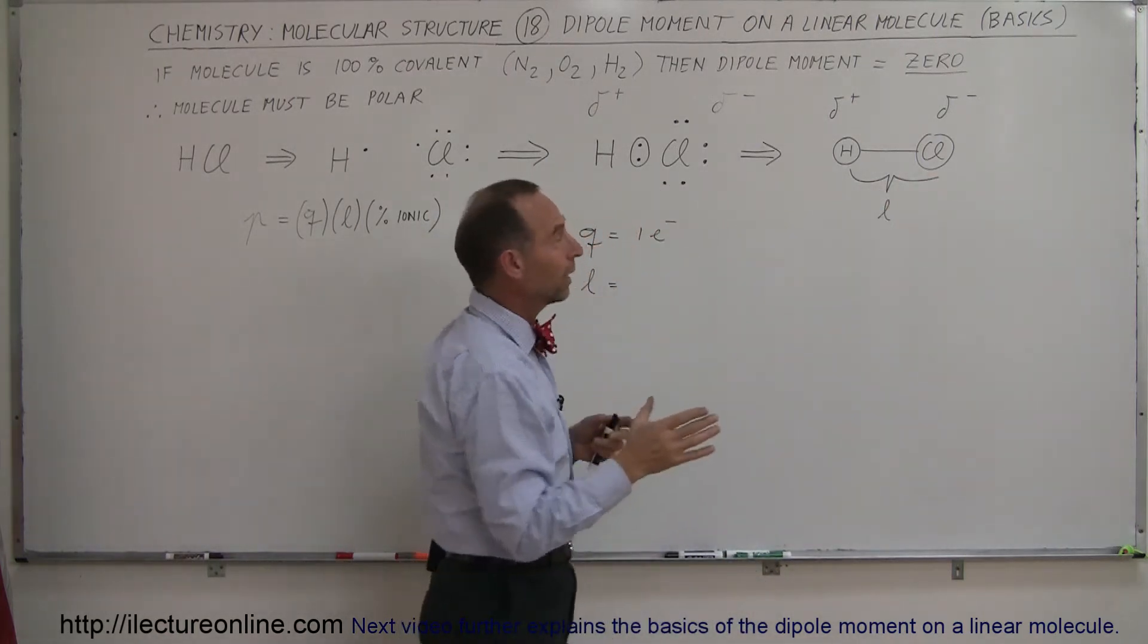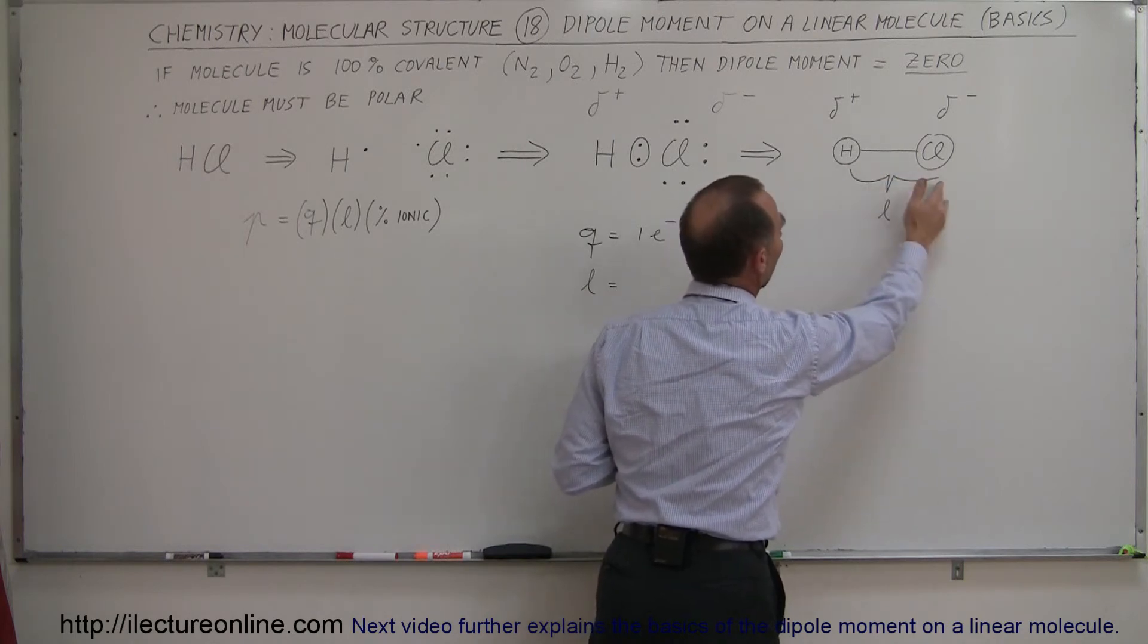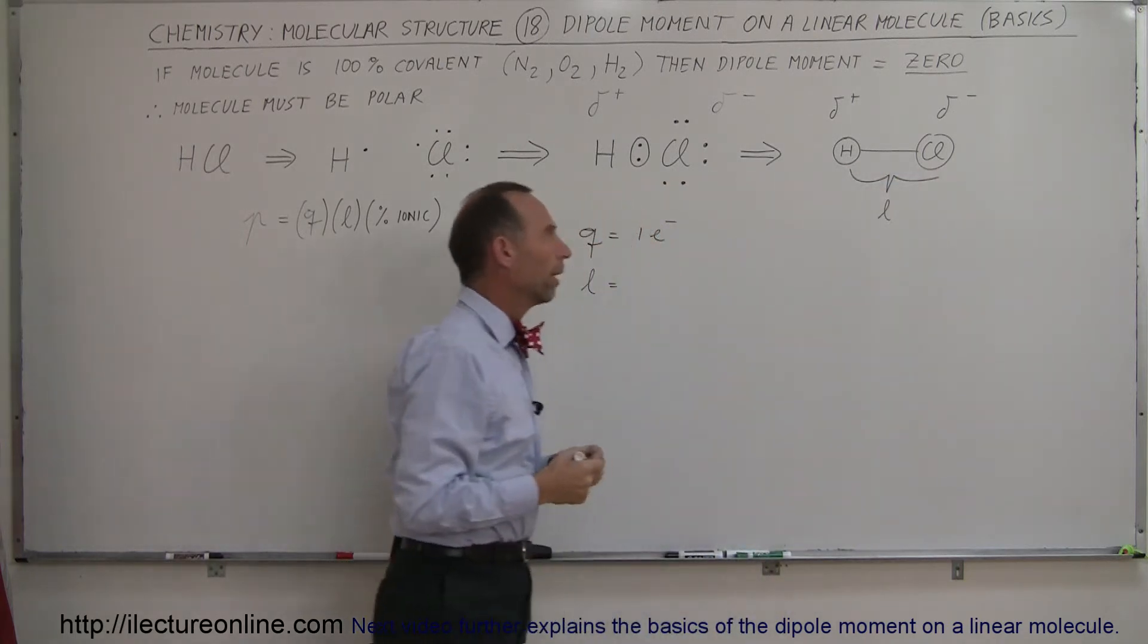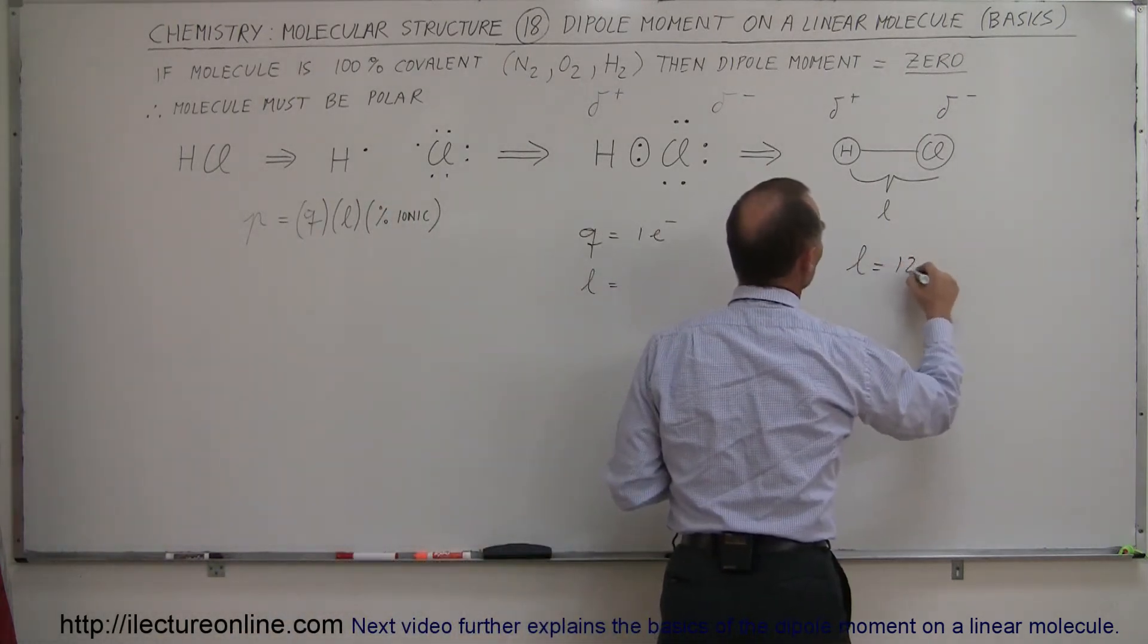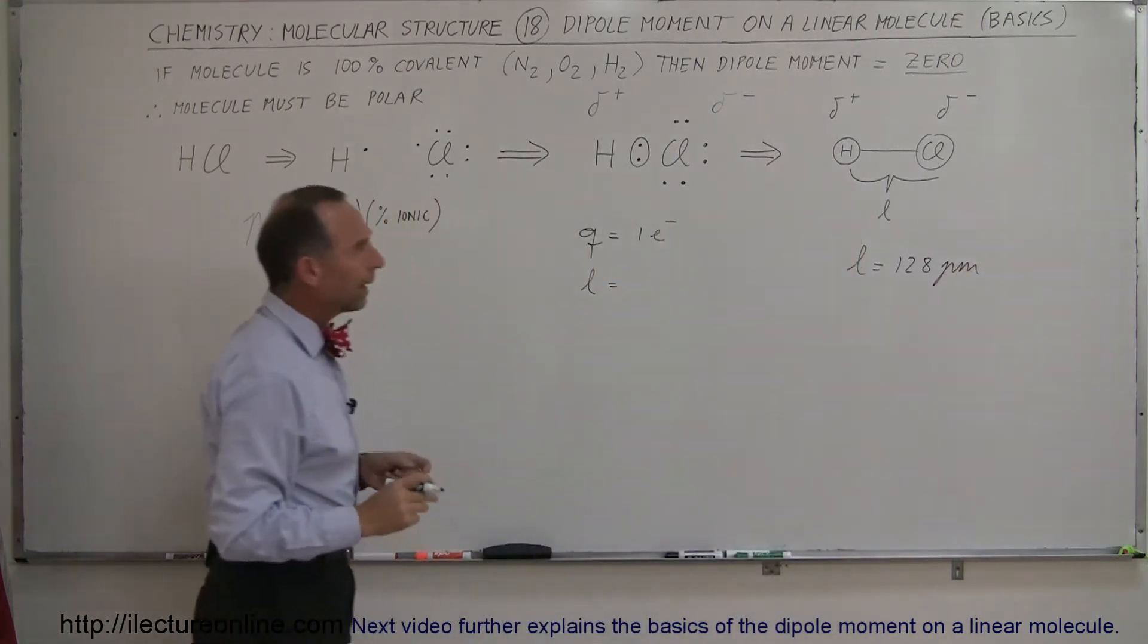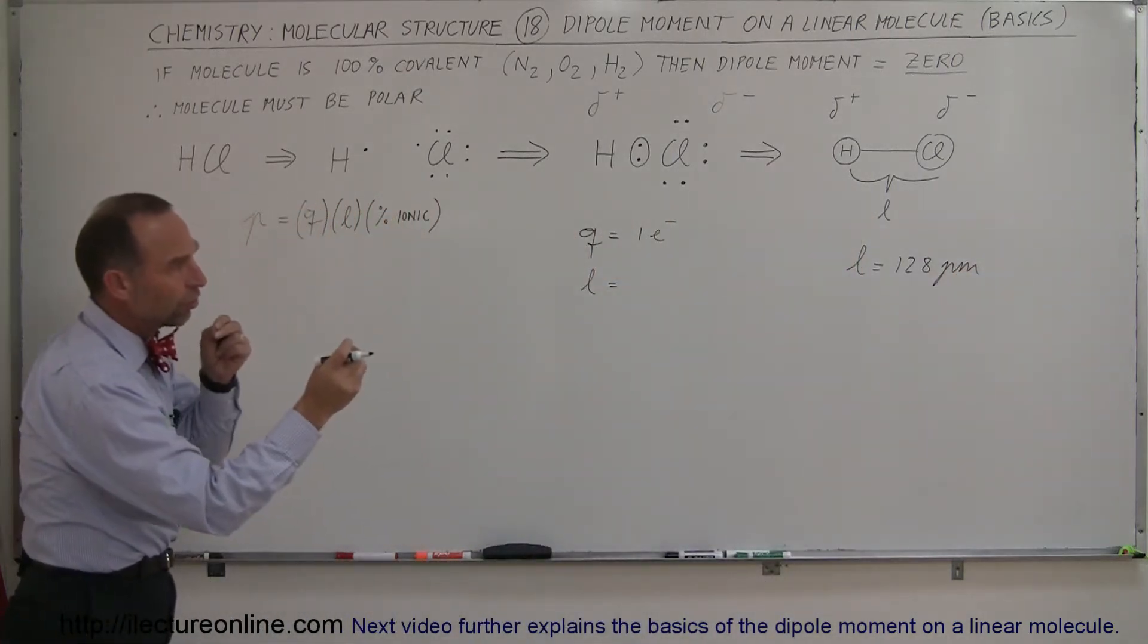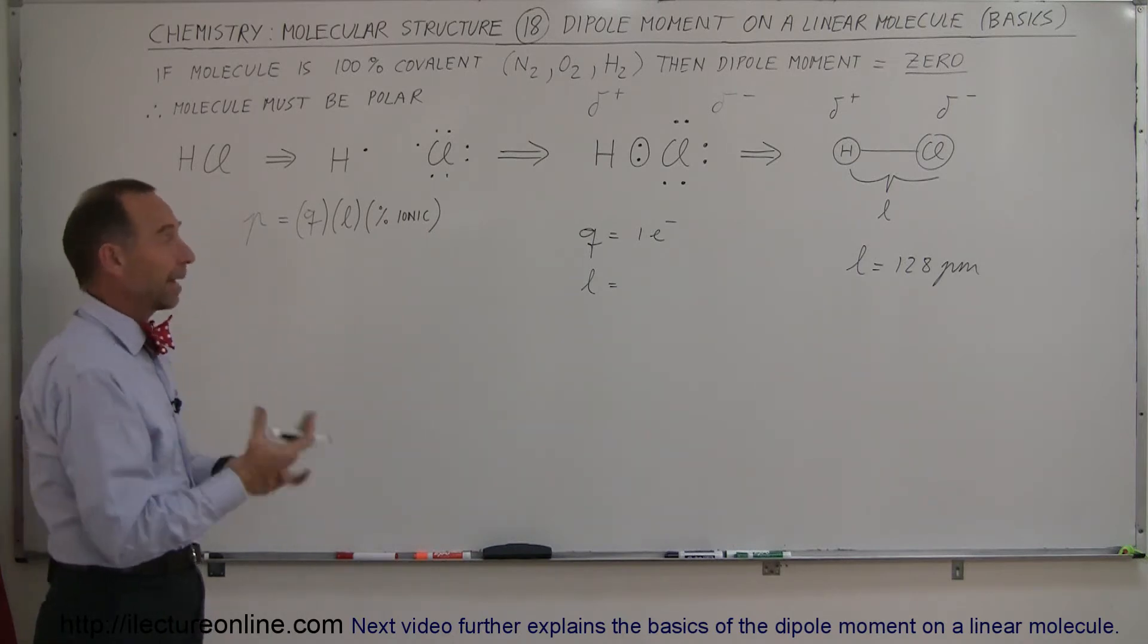This polar molecule will have, of course, a separation distance between the atoms. This is the bond length for hydrochloric acid, and I believe for hydrochloric acid, the bond length is about 128 picometers. Because of that separation of charges and the distance between them, we know that it's going to have a dipole moment.